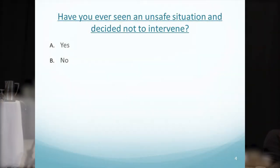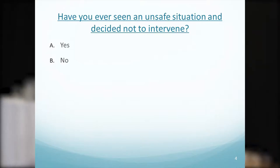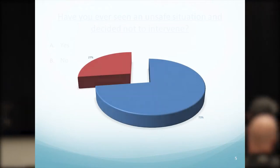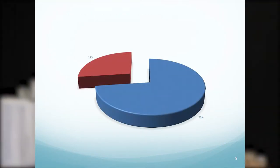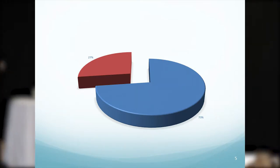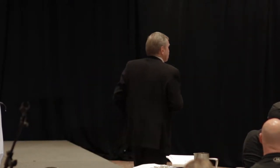Real simple question: have you ever seen an unsafe situation and decided not to intervene? 73% of the people here decided not to intervene in an unsafe situation — three-quarters of the people. The response of only 27% of us having done an intervention is pretty low. It doesn't show engagement and involvement by other people.